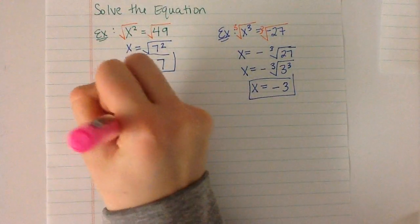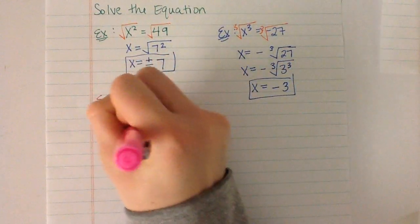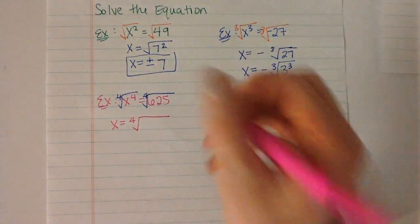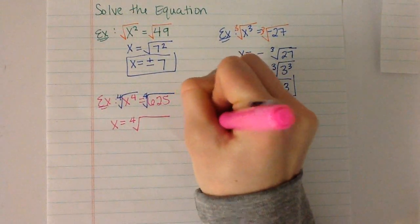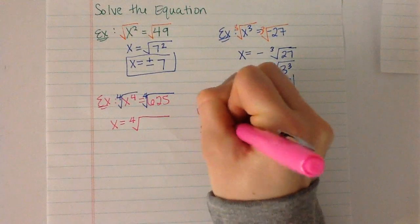So we're going to have x equals the 4th root of 625. We've got to factor that out. So we have 5 and 125.